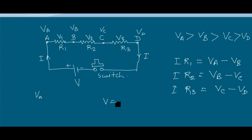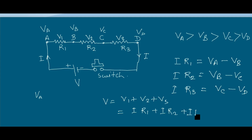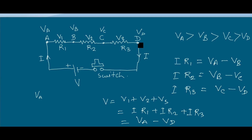So the total potential drop V can be written as V1 + V2 + V3, which is equal to IR1 + IR2 + IR3. This equals VA − VD, the total potential difference between points A and D, which is equal to the voltage of the battery source, V.